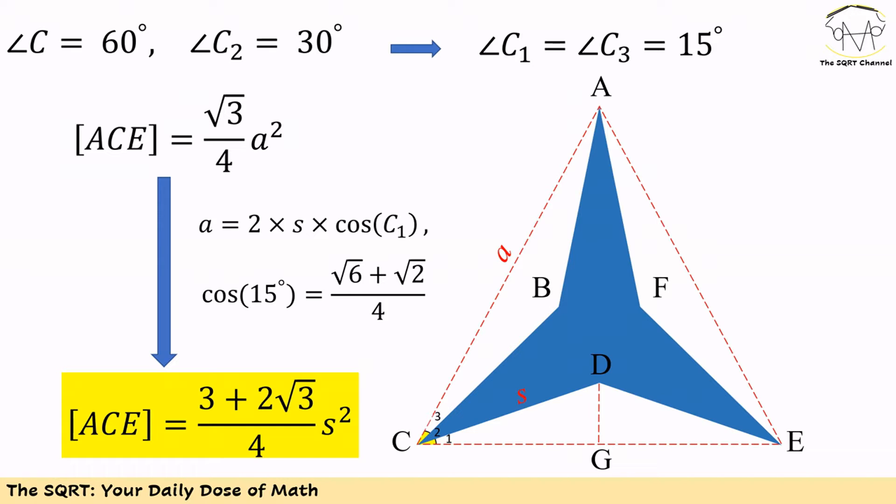We know cosine of 15 can be written as (√6 + √2)/4. If we replace the values, then area of ACE can be written as (3 + 2√3)/4 times s².